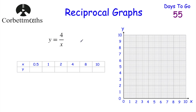Remember whenever we were dividing by fractions, we found the reciprocal of the fraction we were dividing by. So, for instance, if we were dividing by 5, we took the reciprocal of that, and that was a fifth, and we multiplied by the reciprocal. Here we've got 4 over x — this is called the reciprocal graph whenever the x is on the denominator. We've got y equals 4 divided by x, and we've got an x-y table; we're going to find the points by substituting in the values for x.